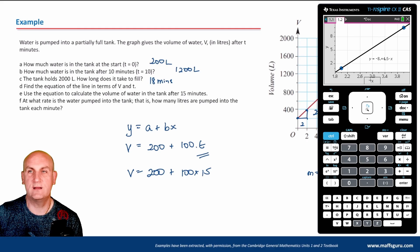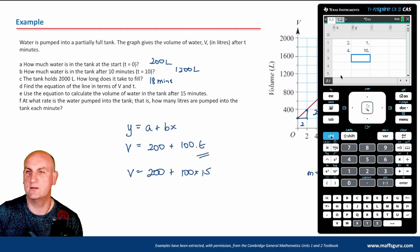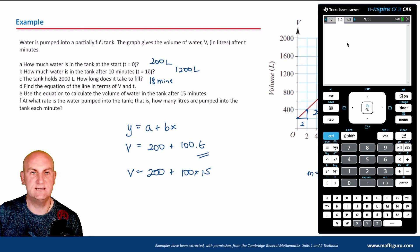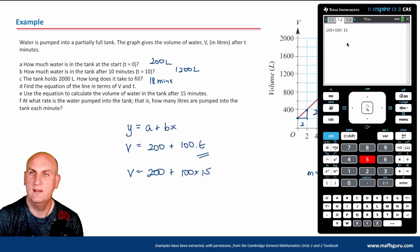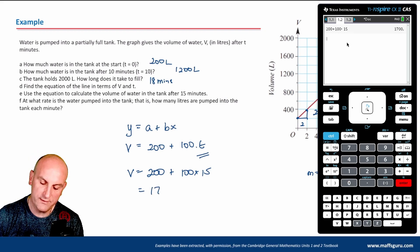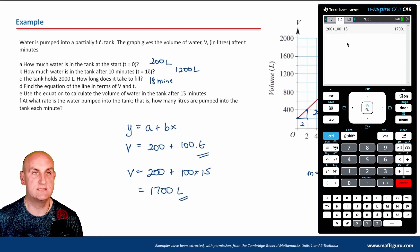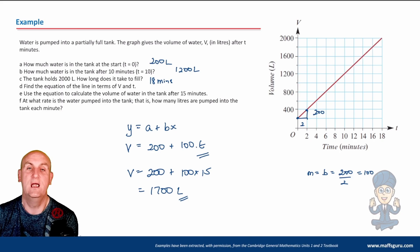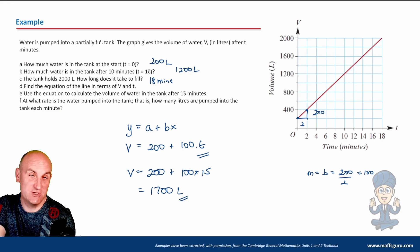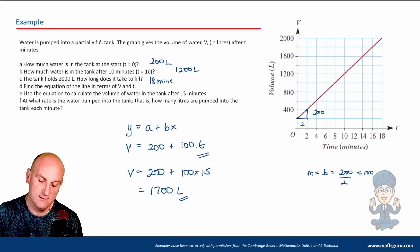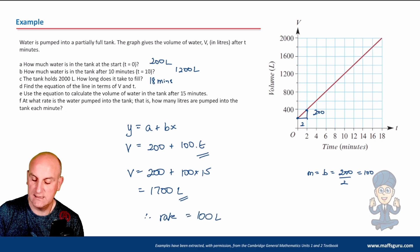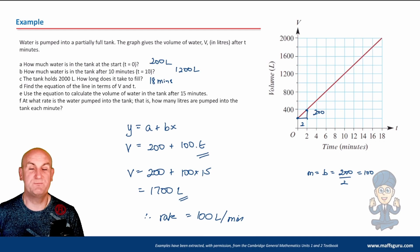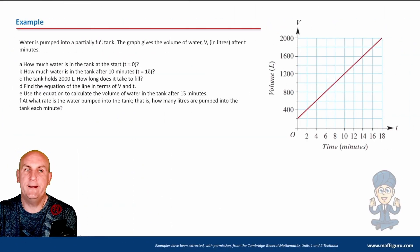Using the calculator: 200 + 100 × 15 = 1700 liters. Don't forget your units. At what rate is the water pumped into the tank? A rate is essentially the gradient for most of these questions. The gradient is 100, so the rate is 100 liters per minute. The units come from the axes — liters and minutes.